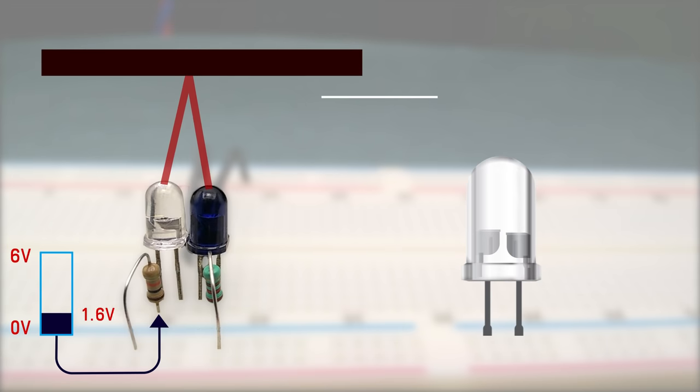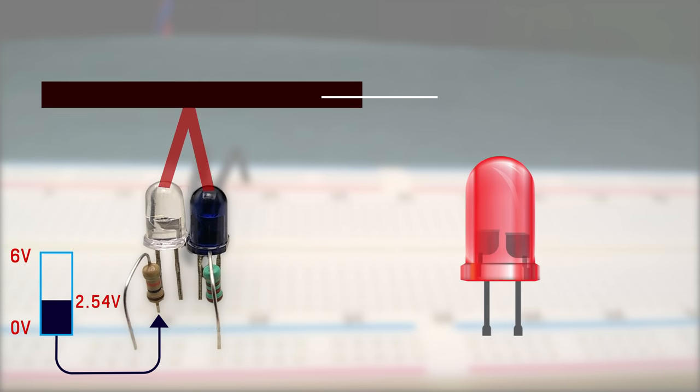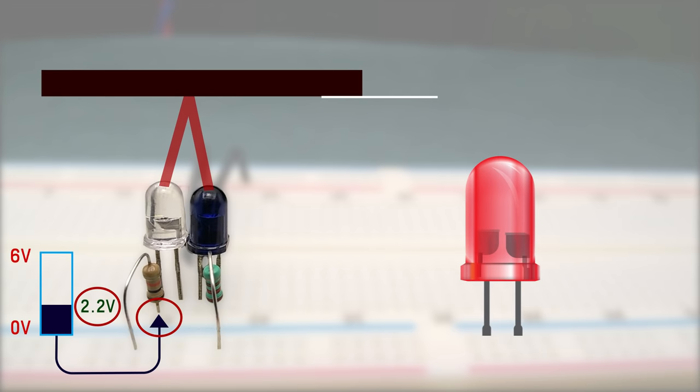Now let's say we need to turn on LED whenever the obstacle comes below this level and let's assume the voltage at this point is 2.2V.